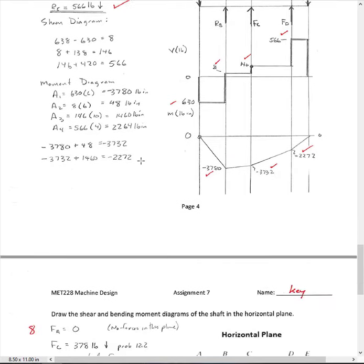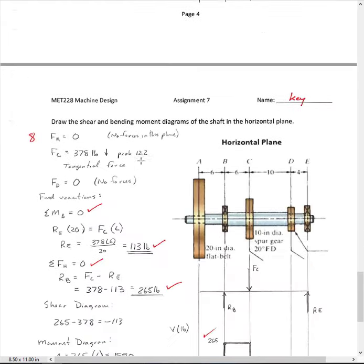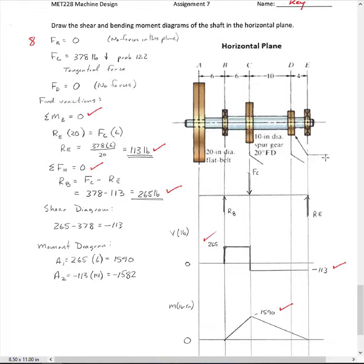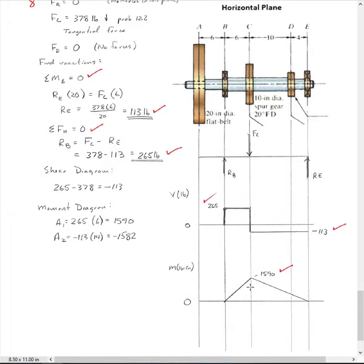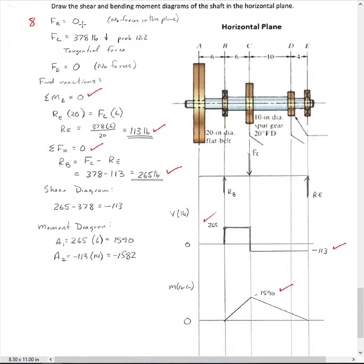There were fewer forces in the horizontal plane, so it's a little bit easier. Because all we really have working in the horizontal plane is our tangential force on the gear. Okay, so it's a little bit easier here. So FC is our tangential force on the gear. We got no forces at A because they're not in this plane, and we got no forces at C because all the forces were not in this plane either.